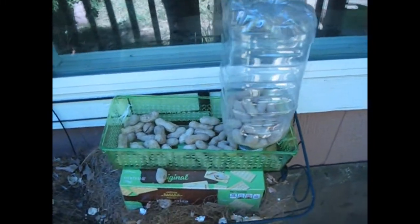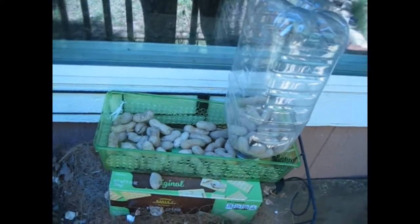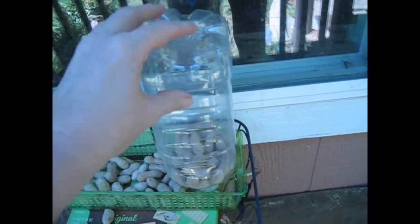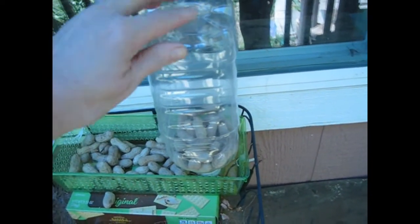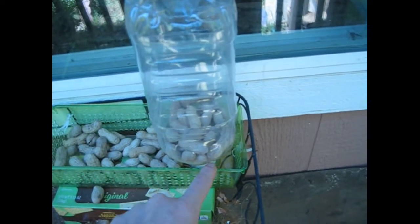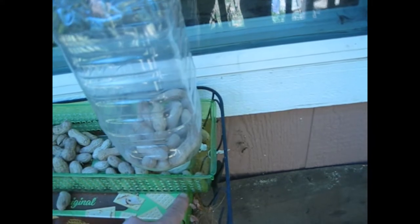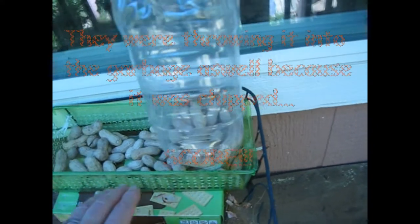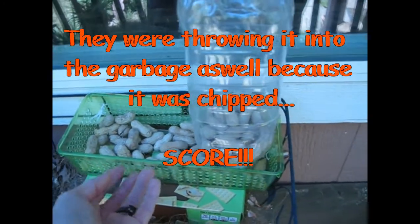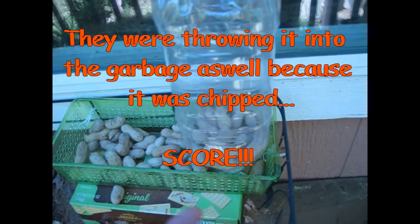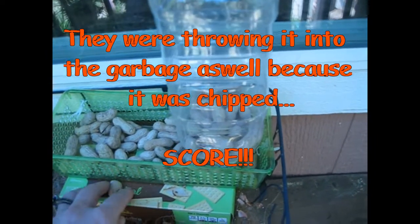My little squirrel feeder by the window so we can see. I made a juice bottle, did the same thing, cut the bottom off, glued the lid with the hot glue to the bottom of this tray that I got at the dollar store with holes and stuff so that if it rained.